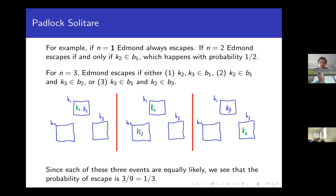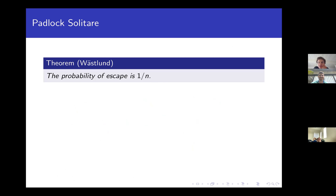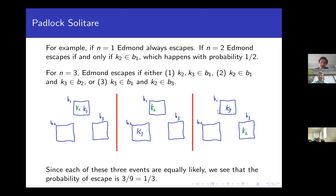At n=1 the probability is 1, at n=2 it's 1/2, at n=3 it's 1/3. So you could probably conjecture that the probability of escaping is 1/n for all n. The first thing you might try is to count all the configurations where you can escape, divide by the total number of configurations, and get the probability. You can do this, but it's not a simple counting process — it's not as easy as the poker example.